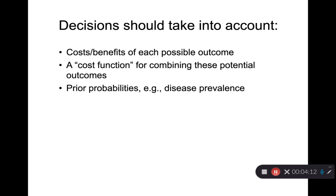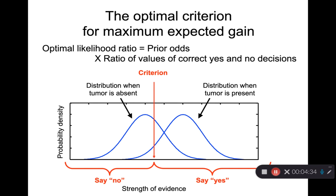Finally, decisions need to take into account all the elements of a decision: the costs and benefits of each possible outcome, some way of combining those costs and their respective probabilities — a cost function — and what's the probability this patient had the disease before I even ran the test, in other words disease prevalence, the prior probability. It turns out there is a correct answer to this. The math tells you where to place your criterion. You place it where the likelihood ratio — the probability of getting this number if the patient did not have the disease relative to the probability of getting this number when the patient did have the disease — equals the product of the prior odds (probability they have it divided by probability they don't) and the reward benefits for a correct yes and no answer. So the math tells you how to make this decision and how to use the evidence correctly.